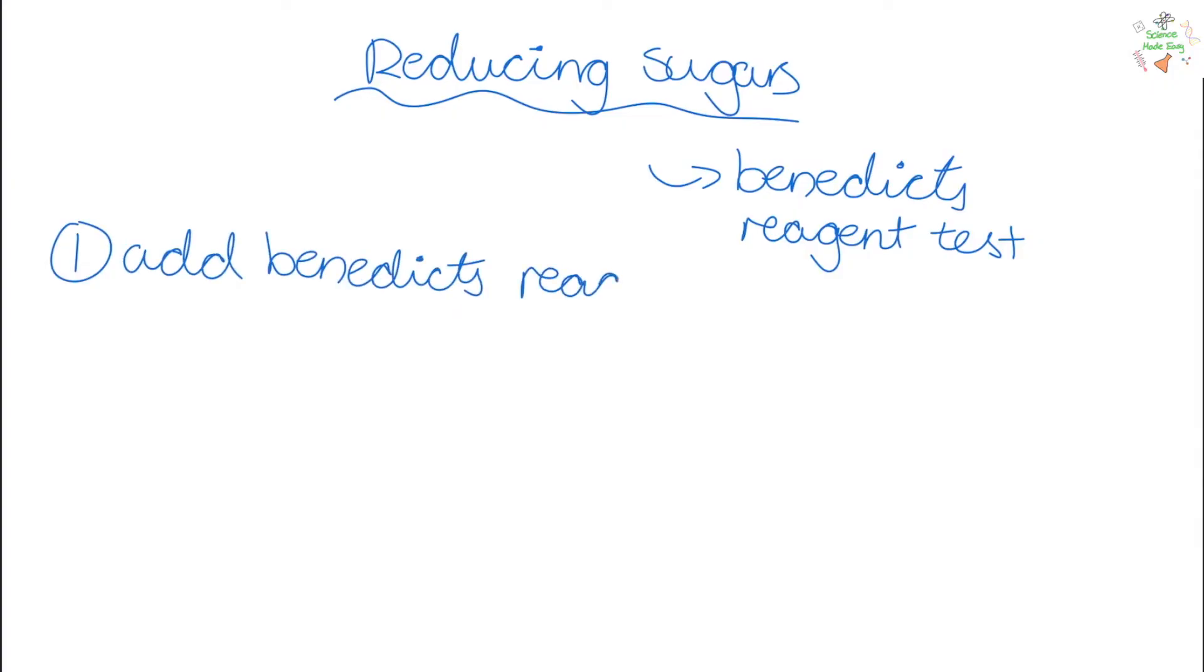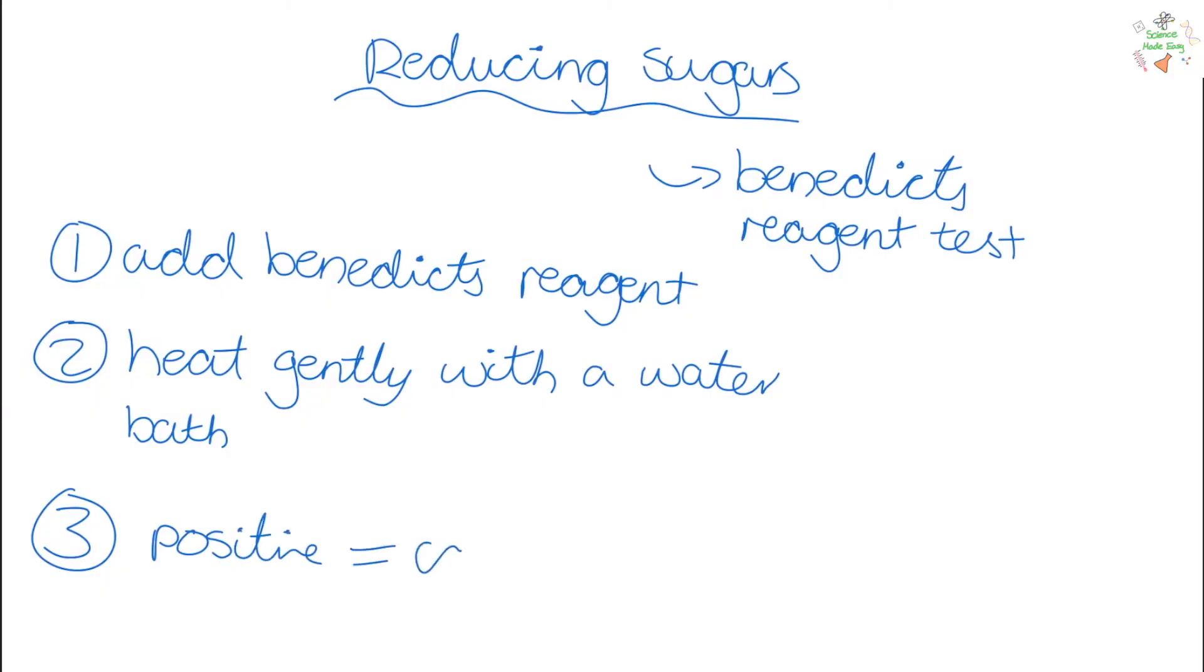So to test for reducing sugars, we need to do the Benedict's Reagent test. The first step is to add Benedict's Reagent to the sample, then heat gently with a water bath. If the test is positive, it will form a coloured precipitate. A blue colour would mean a low sugar concentration, and an orange red colour would mean a higher sugar concentration.